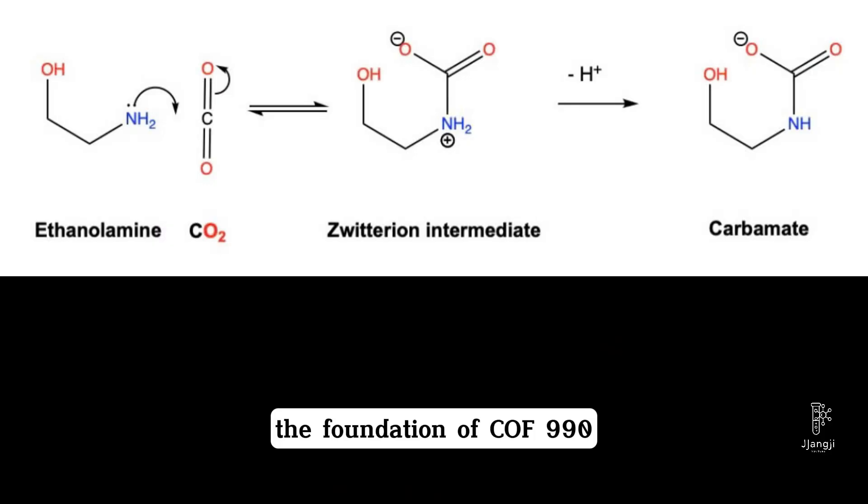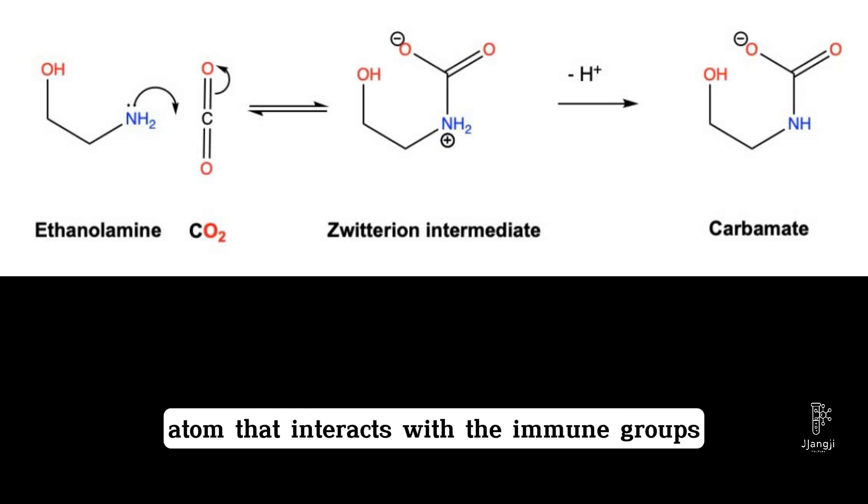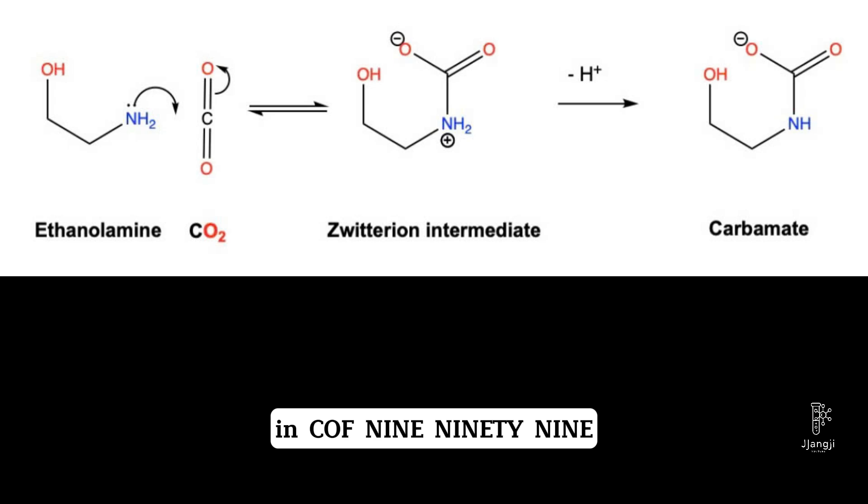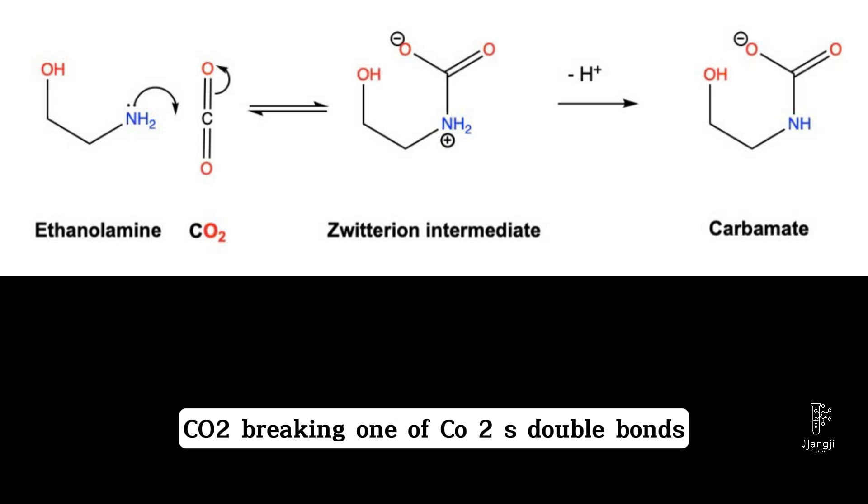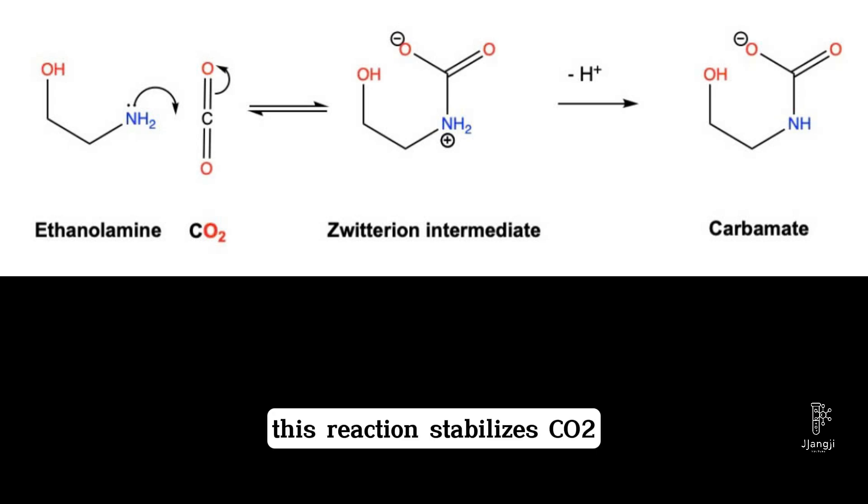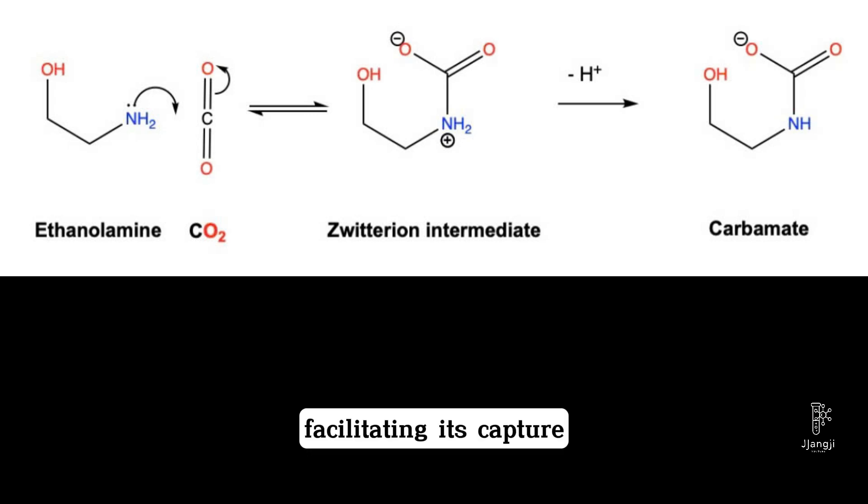The foundation of COF-999's effectiveness lies in its chemical reaction mechanism involving ethanolamine and CO2. As an electron-deficient molecule, CO2 contains a carbon atom that interacts with the amine groups in COF-999. The nitrogen atom in the amine functional group donates a lone pair of electrons to the carbon atom in CO2, breaking one of CO2's double bonds and forming a stable covalent bond between nitrogen and carbon. This reaction stabilizes CO2 by converting it into a carbamate compound, facilitating its capture.